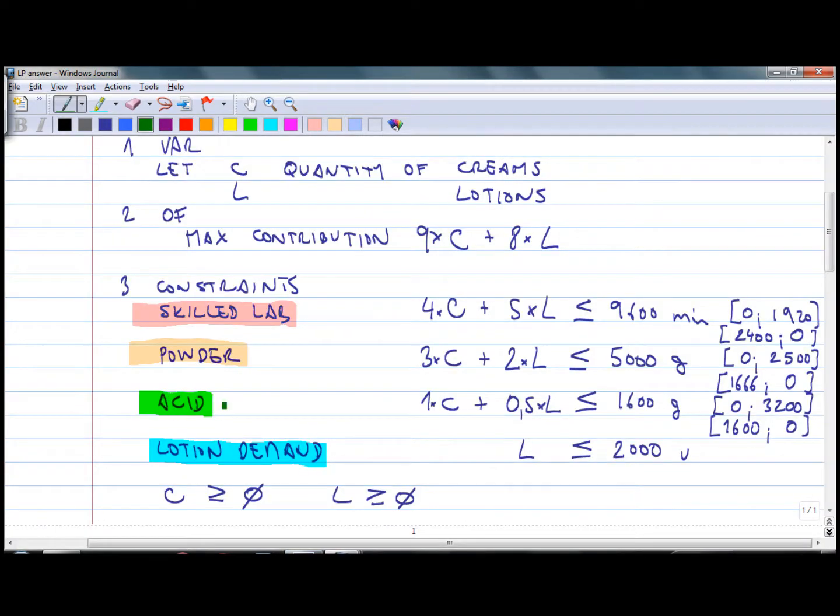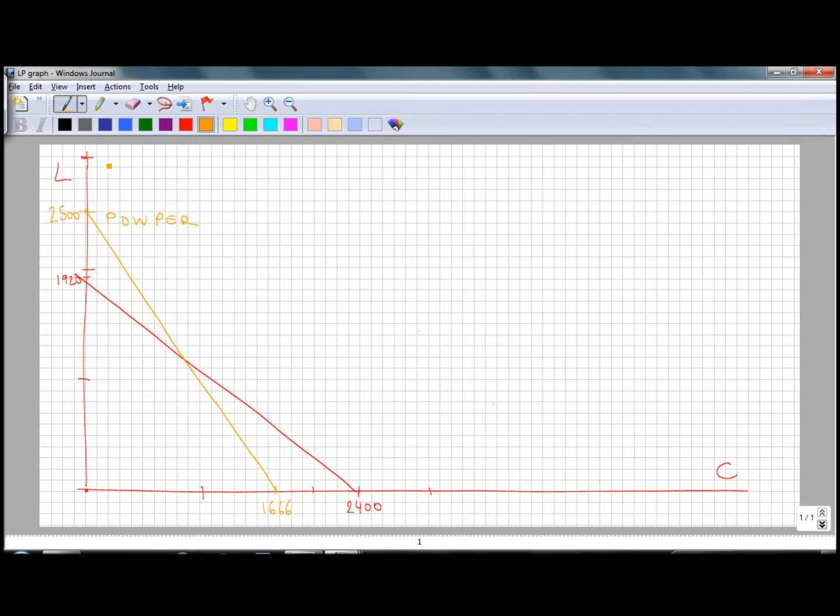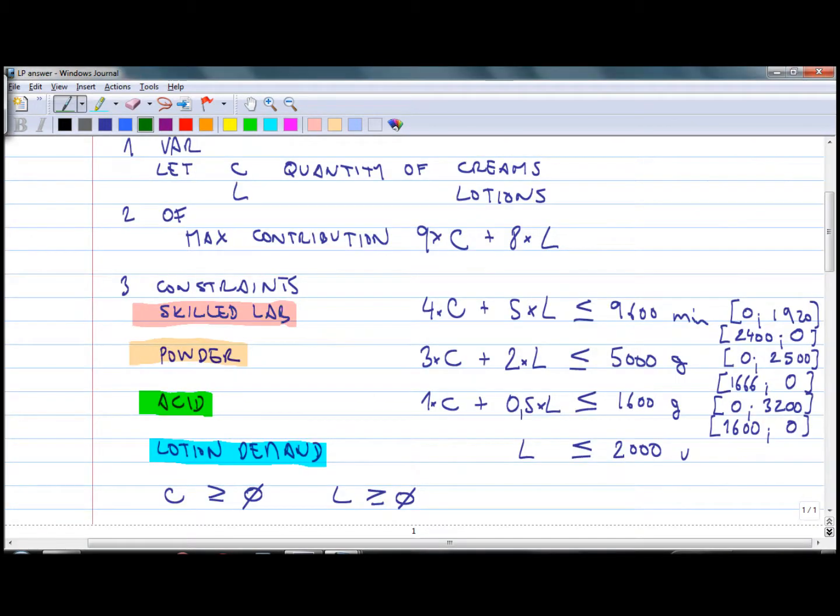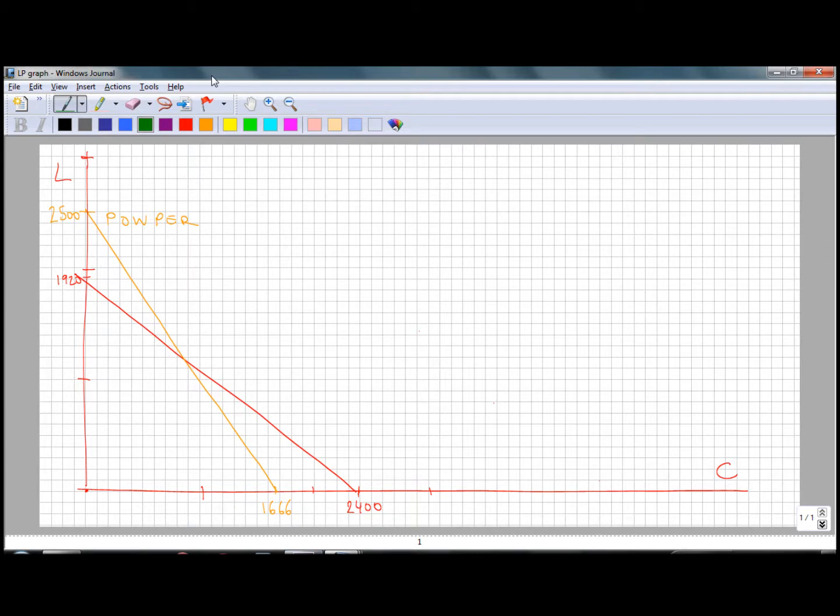The next line is for acid. The intercept should be 3200, which is however above the limit of my graph. A good trick would be to recalculate a point. We need two points and it doesn't have to be intercept. It could be for any other value of C. Let's say 1000. If C is 1000, L is going to be 1600 less 1000, which is 600 divided by 0.5. That's going to be 1200. I will put the points on the graph.